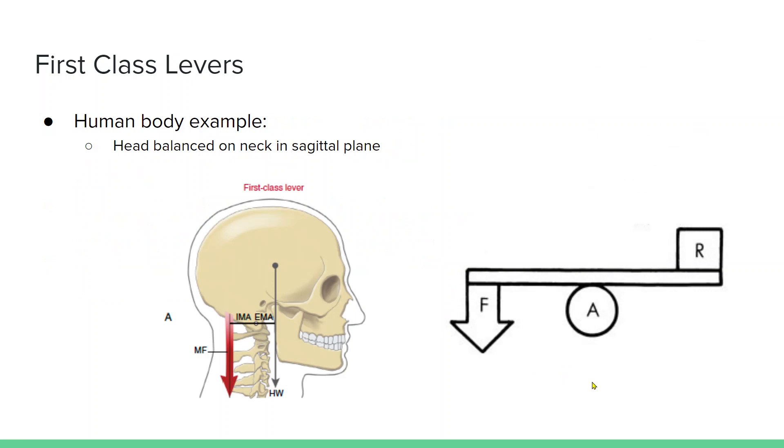One example in the human body is the head. We have the axis, which is our atlas bone. And then we have the weight of the head, which is our resistance. And then the extensor muscles on the back create the force. So when we nod yes, that is an example of the first class lever system.